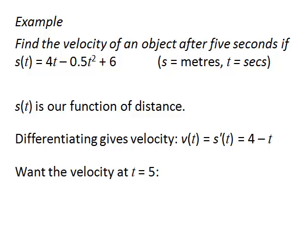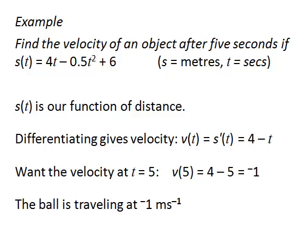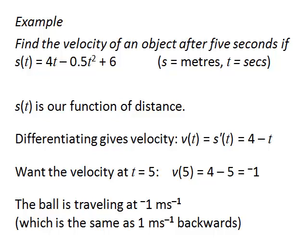And we want the velocity at t equals 5 because it asks for the velocity after 5 seconds. So we stick t equals 5 into our velocity function. 4 minus 5 is minus 1. And the ball is travelling at minus 1 metres per second, which is the same as 1 metre per second backwards.